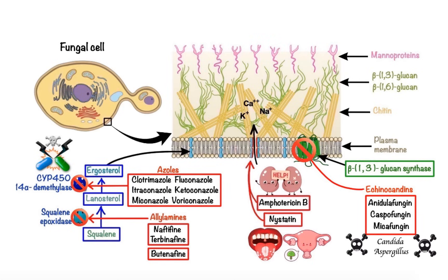Before we end, I wanted to briefly mention a couple more antifungal drugs that you may encounter in clinical practice: griseofulvin and flucytosine. Unlike the cell wall-targeting antifungals discussed thus far, griseofulvin and flucytosine work by disrupting fungal cell division via mechanisms similar to cancer chemotherapeutic agents. Specifically, griseofulvin binds to tubulin, disrupting microtubule function and inhibiting fungal cell mitosis.